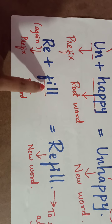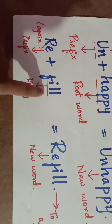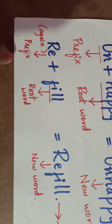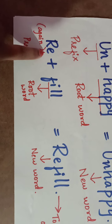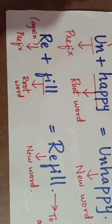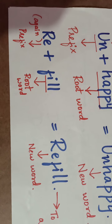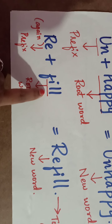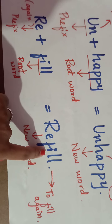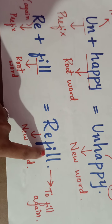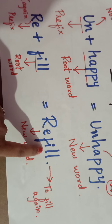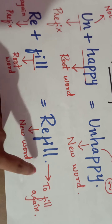Let us see one more example. 'Fill' is your root word. 'Re' means 'again', so we add the prefix 're' to 'fill'. 'Fill' means to fill something into a box. When you add the prefix 're', it changes into a new word: 'refill'.